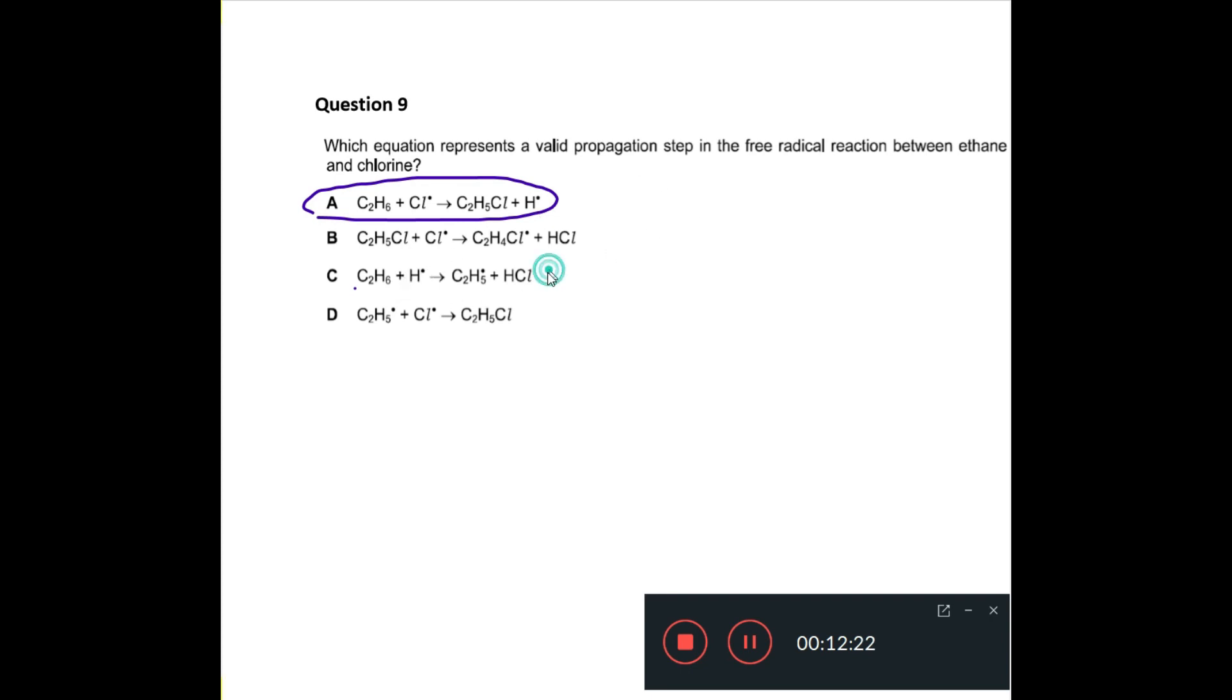Now, if we look at C, C has the ethane reacting with a hydrogen radical. The hydrogen radical doesn't take part in your radical substitution reaction here, so that one is also out along with A. So, we can rule that one out. Now, if we look at B, this doesn't happen. You don't form the chloroalkane, and then it reacts with more chlorine in the propagation step. So, this one is out. This is your answer. That is formed in the termination step, where you have the alkyl radical, in this case, the ethane radical, reacting with a chlorine radical to form a chloroalkane. D is your answer.